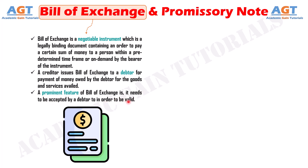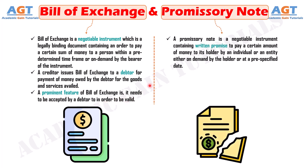On the other hand, a Promissory Note is a negotiable instrument containing a written promise to pay a certain amount of money to its holder by an individual or an entity either on demand by the holder or at a pre-specified date.